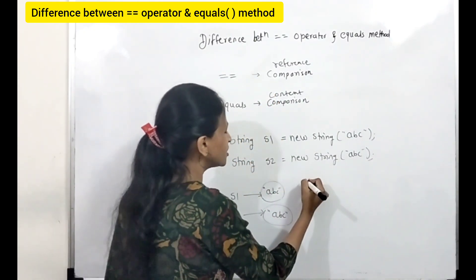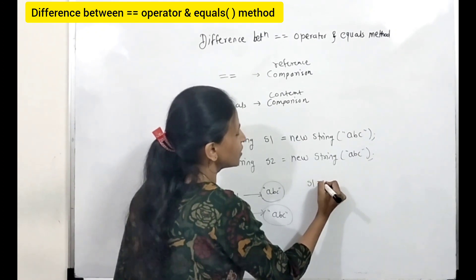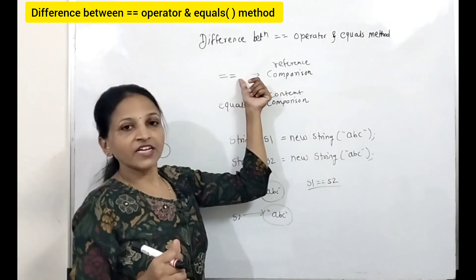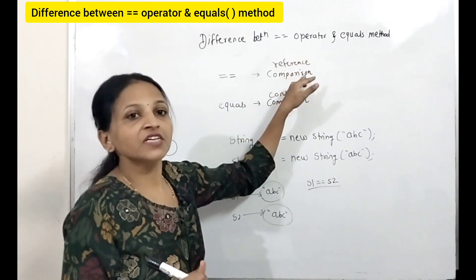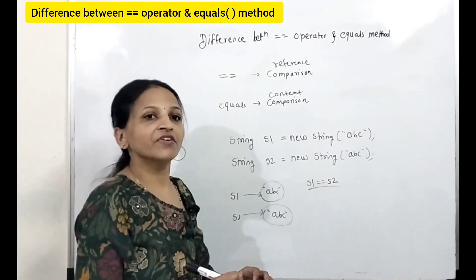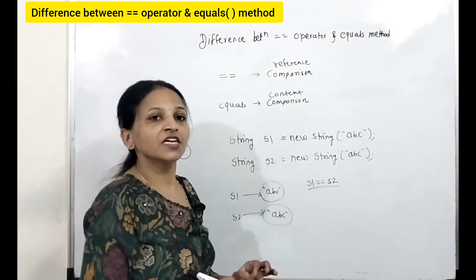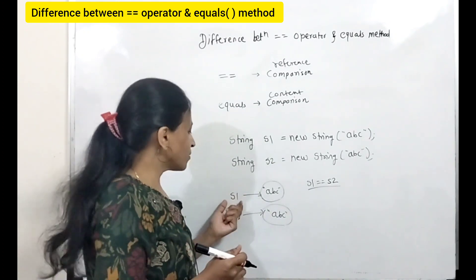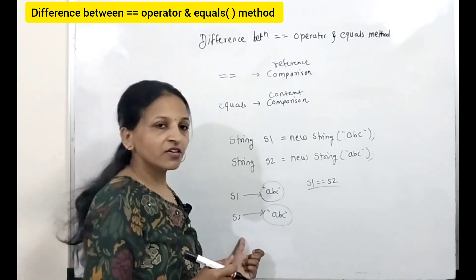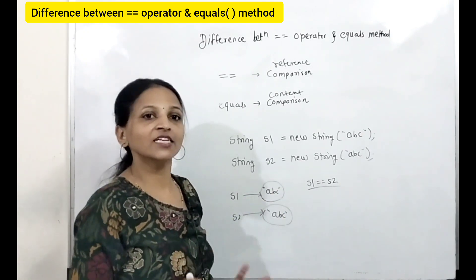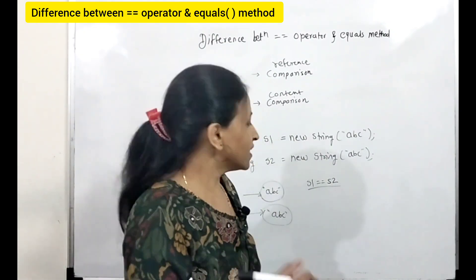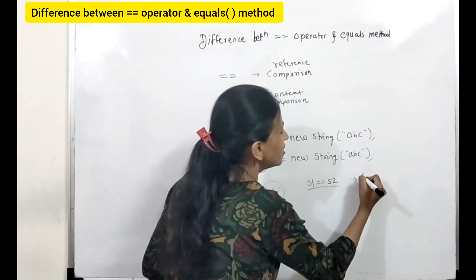Now if we check whether s1 == s2, what will it return? We know this equality operator is for reference comparison — meaning whether s1 and s2 both have the same address. Here we can check the hash code. The contents are same but the objects are two different objects, both having different addresses and different references. That's why it will return false.